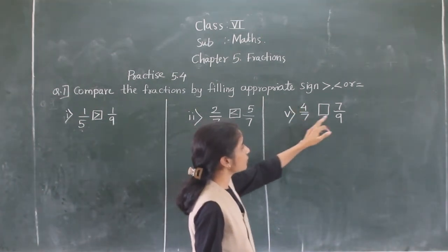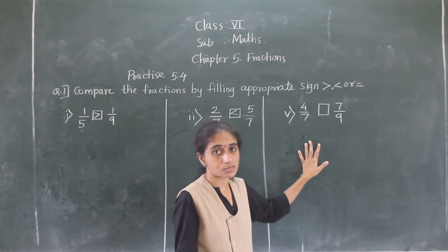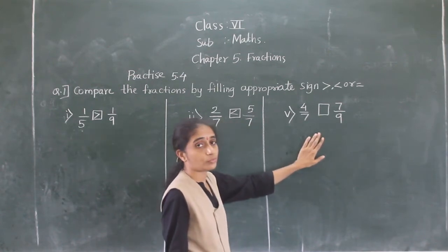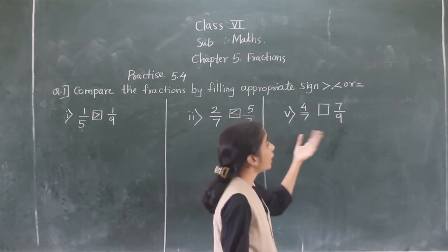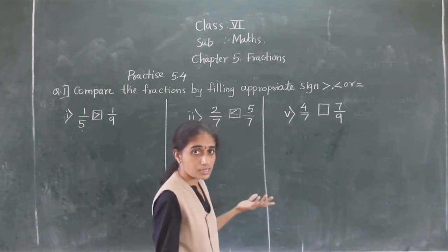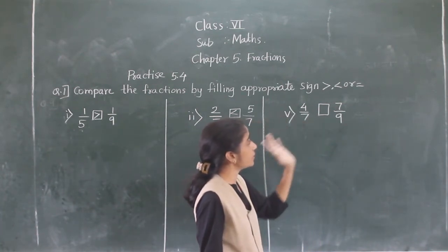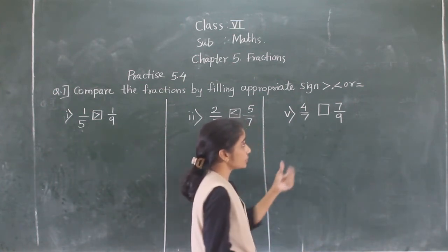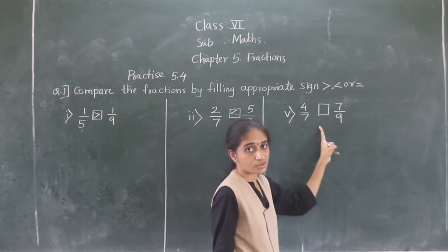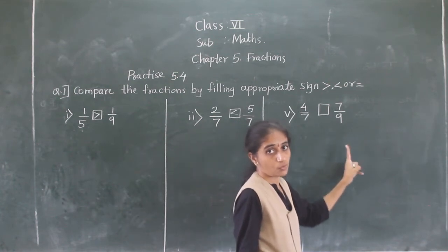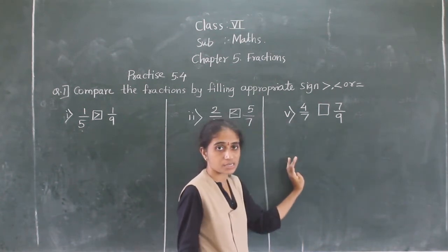Example 5: 4 upon 7 and 7 upon 9. If you observe, the numerators are different and the denominators are also different. So we have to make the denominators the same. We find the LCM. If you find the factors of 7 they are 1 and 7; the factors of 9 are 1, 3, and 9. So 7 and 9 only share factor 1 — they are co-prime.